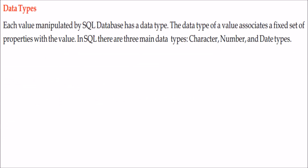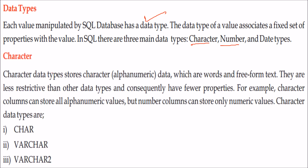In SQL or any language, you must specify the data type you are working with. Each value manipulated by a SQL database has a data type that indicates what type it is and what operations are possible. There are three main types of data: character, number, and date. Character data stores alphanumeric data — words in free form, for text. A character column can store A to Z and 0 to 9. Number columns can only store numeric values. Character data types include char, varchar, and varchar2.